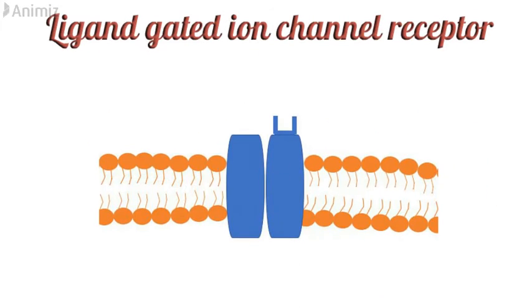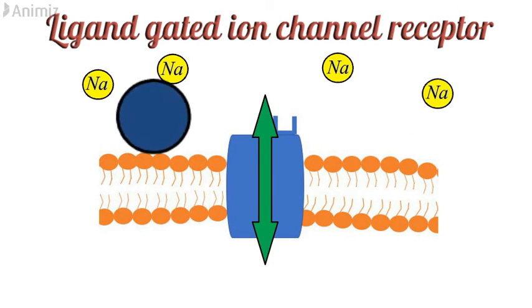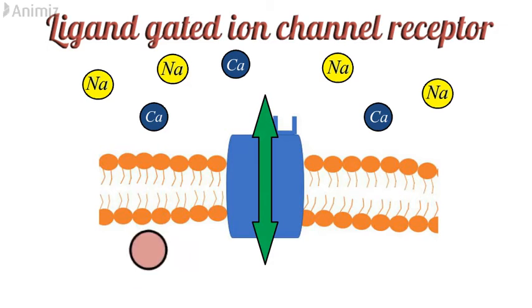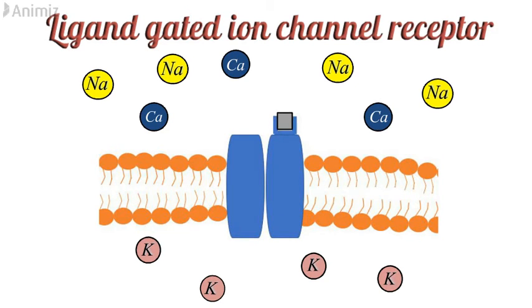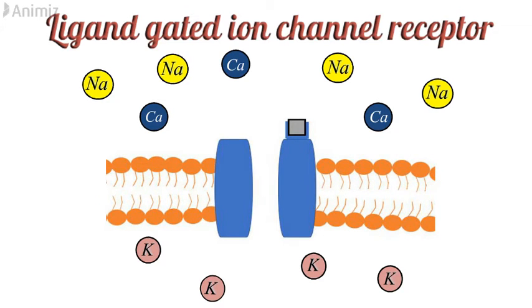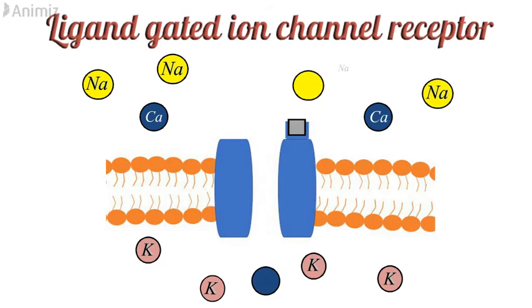The first type, ligand-gated ion channel receptors, helps in the transport of ions across the cell membrane — ions like sodium, calcium, and potassium. Sodium and calcium ions are present extracellularly, while potassium ions are present intracellularly. When a ligand binds to the receptor, it opens the ion channel, facilitating ion transport. Movement of calcium and sodium ions intracellularly leads to excitation, while movement of potassium ions extracellularly leads to inhibition.